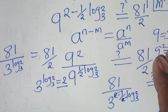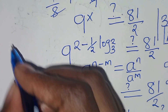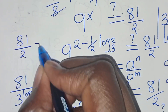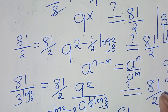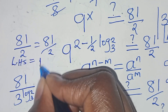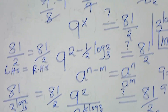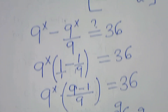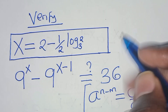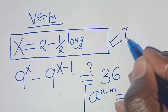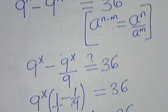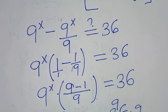Substituting this, we have 81 over 2, which should equal 81 over 2. The left-hand side equals the right-hand side, which confirms that the value of x, which is 2 minus one-half log base 3 of 2, satisfies the equation. Please refer to the steps, like this video, and subscribe. See you in the next video.